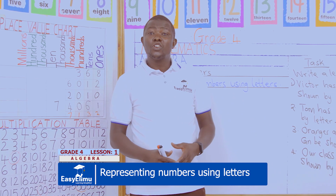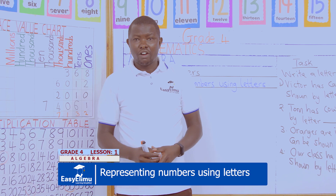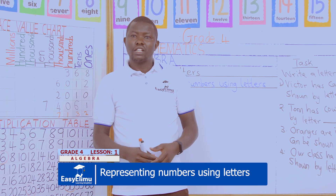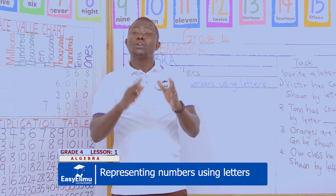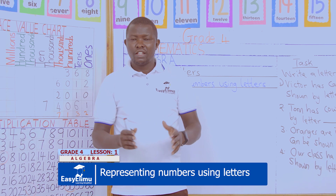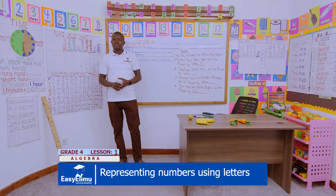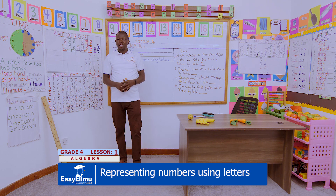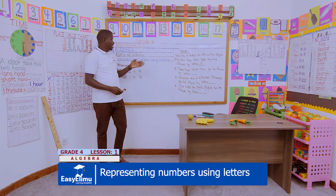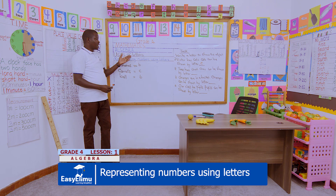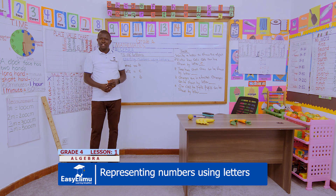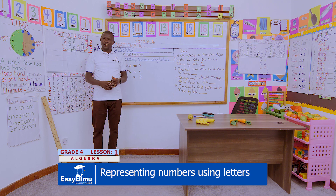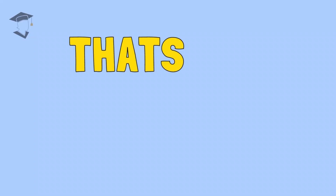Remember, you can also use items found in our homes. For example, the spoon — you can choose a letter to represent the number of spoons found in our homes. The number of chairs — you can represent them using a letter. By doing so, you'll be using letters to represent numbers. Let us meet again in our next lesson.